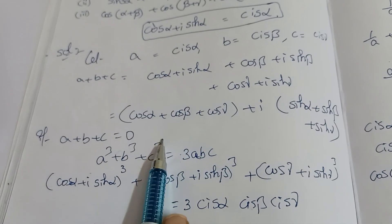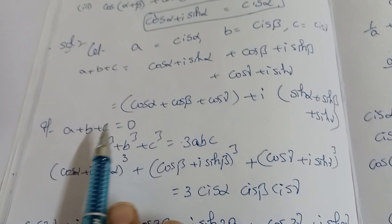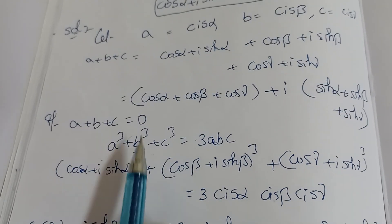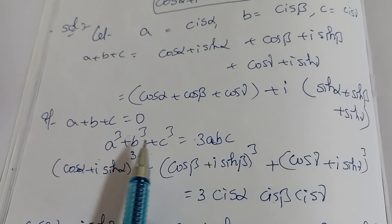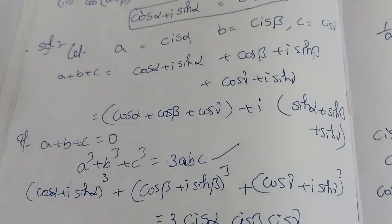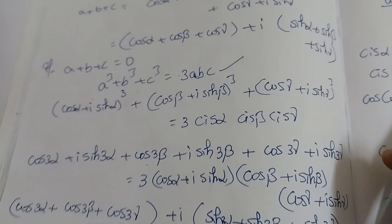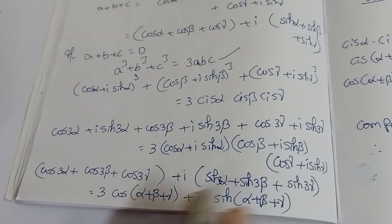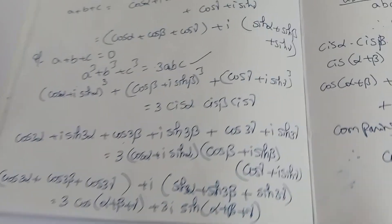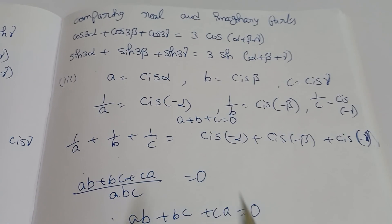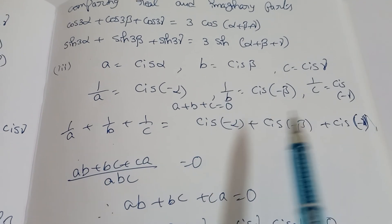To summarize: we took a = cis α, b = cis β, c = cis γ and added them. The given conditions make a + b + c = 0. Using a³ + b³ + c³ = 3abc when a + b + c = 0, and comparing real and imaginary parts, parts 1 and 2 are completed. For part 3, taking the reciprocal: since a + b + c = 0, the reciprocal sum is also 0, giving ab + bc + ca = 0, and comparing real parts proves the third identity.